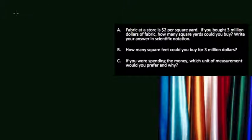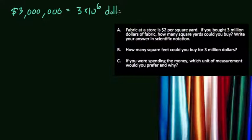So $3 million is the amount you're spending. That means we have six zeros. In scientific notation, we have 3 times 10 to the 6th. And this is dollars that we're looking at.